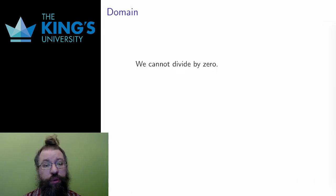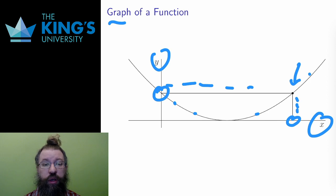For every input, a function only produces one output. That means that each input only has one point on the graph. From anywhere on the x-axis looking above and below, there is only one point I can find on the graph.